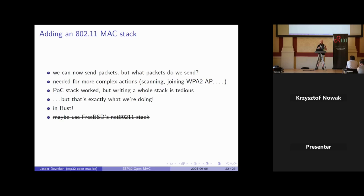We can now send and receive packets, which is nice, but we still have to know what packets to actually send — for this we need a MAC stack, and there are several open source versions. FreeBSD has a MAC stack, Linux has a MAC stack, but these are all intended to run on microcomputers rather than microcontrollers. I thought we'd do the same as Espressif did and port the FreeBSD stack to the ESP32 — I know they did this because of their licenses. Unfortunately they don't have to open source it because it's under the BSD license. I tried to do the porting and it turned out to be not so nice, so now we'll write the new Wi-Fi stack in Rust.